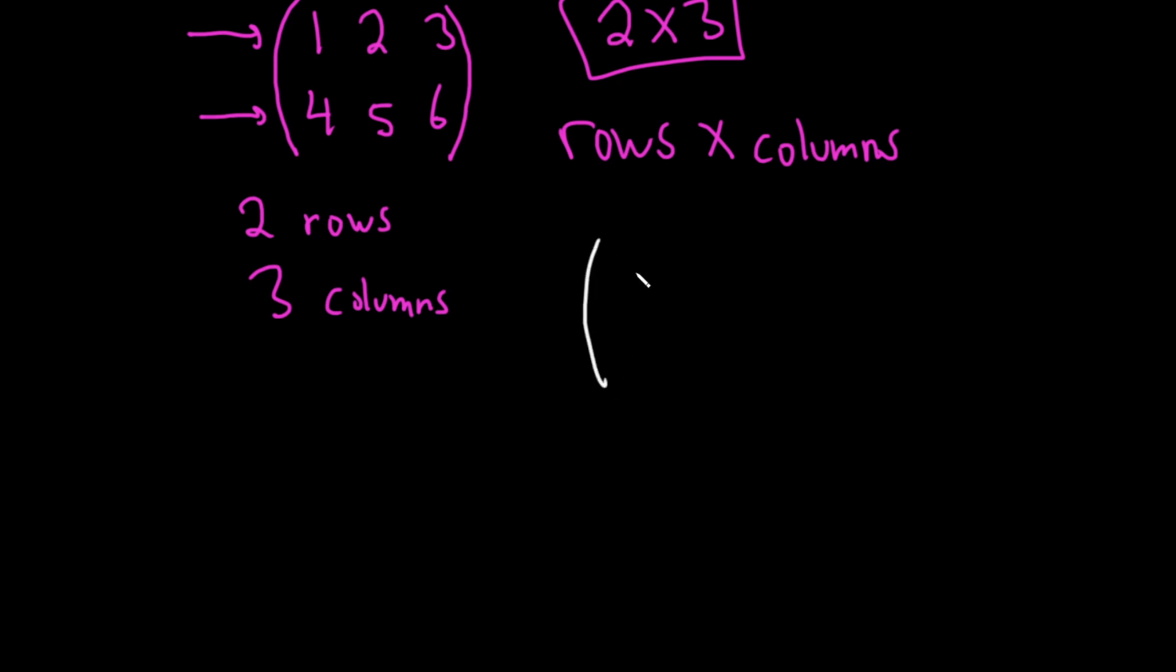Let's go ahead and do a few more examples so you get the idea. Let's say we have a matrix 1, 4, 5, 6. In this case, there are 2 rows, 1, 2, and 2 columns, 1, 2. So this would be a 2 by 2 matrix. That would be the dimension. You can see that the dimension is really just a way to indicate the size of a matrix. So when we think about how big a matrix is, we always talk about its dimension.